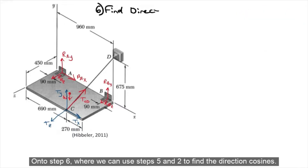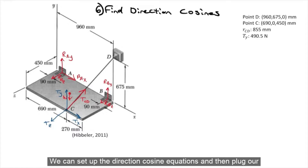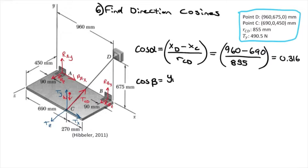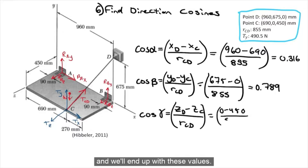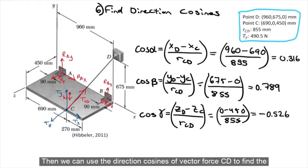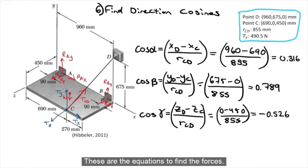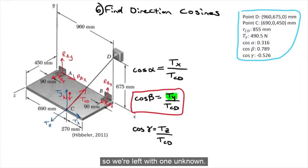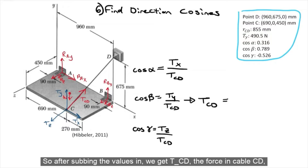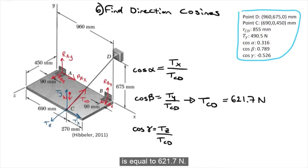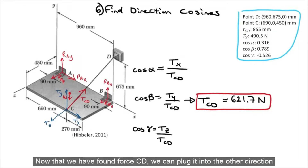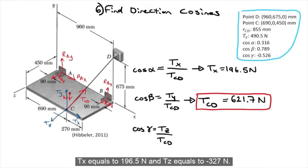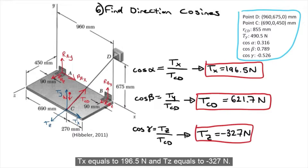On to step 6, where we use steps 5 and 2 to find the direction cosines. We set up the direction cosine equations and plug in the corresponding position coordinates, and we end up with the direction cosine values. Then we use the direction cosines of vector force CD to find the force components of the cable. We start with the Ty equation since we already found Ty, leaving 1 unknown, and after substituting values, we get T_CD, the force in cable CD, equal to 621.7 newtons. Plugging T_CD into the other direction cosine equations, we find Tx equals 196.5 newtons and Tz equals negative 327 newtons.